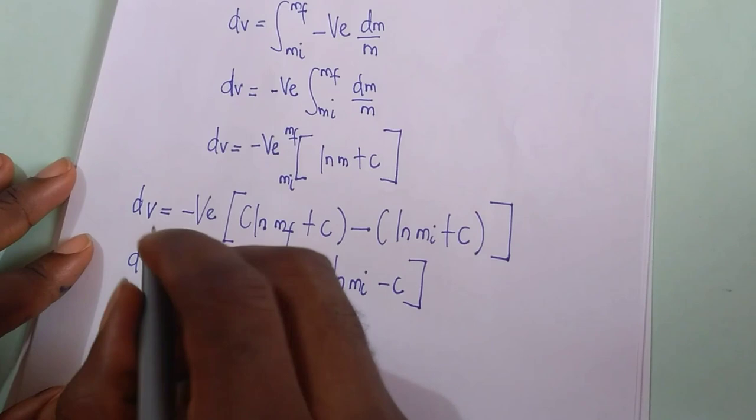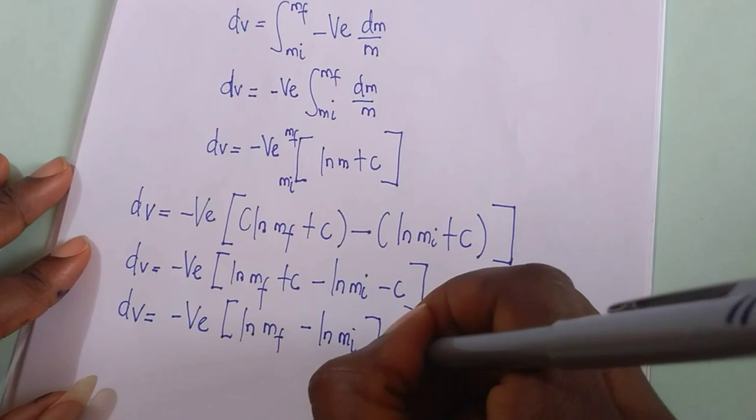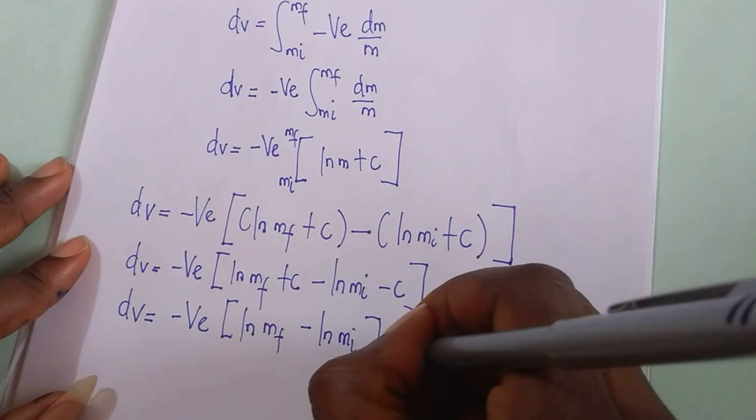Now, substituting for each values, we have dv equals to minus ve in brackets, ln m_f minus ln m_i.